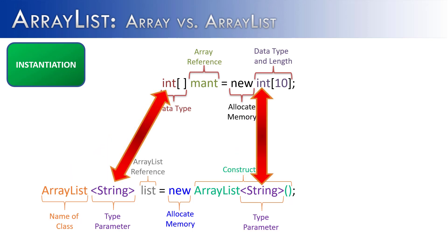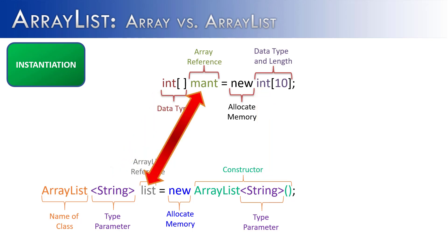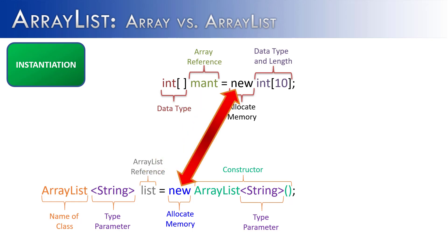In type parameters, that's where the array list says what type of data is going to be inside it. But we already had that inside of an array at the beginning and at the end. Something that's similar is that they're both referencing something — mant is referencing an array, and list is referencing an array list. Another similarity is the keyword new, which is saying: I need memory for either the array list or the array.